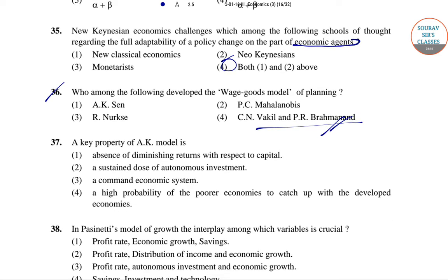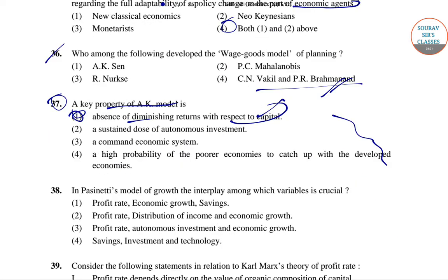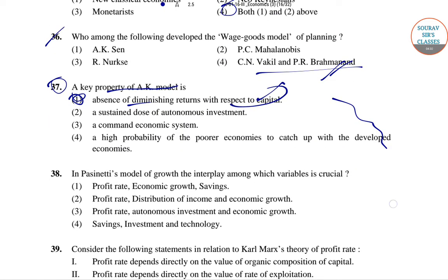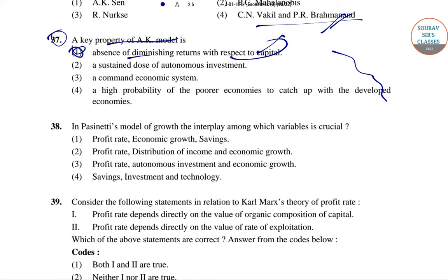Question 37: The key property of the AK model — out of the four options, the right answer is the absence of diminishing returns with respect to capital. The right answer for question 37 is option 1.